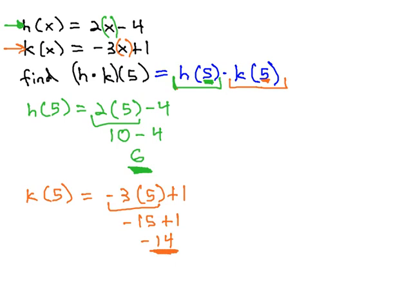We have k(5) = -14. Now we determine what operation to do with both results. In this case, we multiply them together.